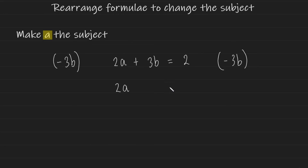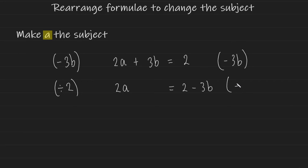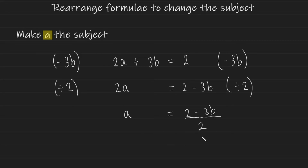Plus 3b minus 3b leaves us with 2a, and on the other side it becomes 2 minus 3b. Now all I have to do is eliminate the 2, which is attached to the a by multiplication, so I divide by 2 on both sides. This leaves us with a equals 2 minus 3b all over 2, written as a fraction. And there you have it — that's how you rearrange to make a the subject for a two-step formula.